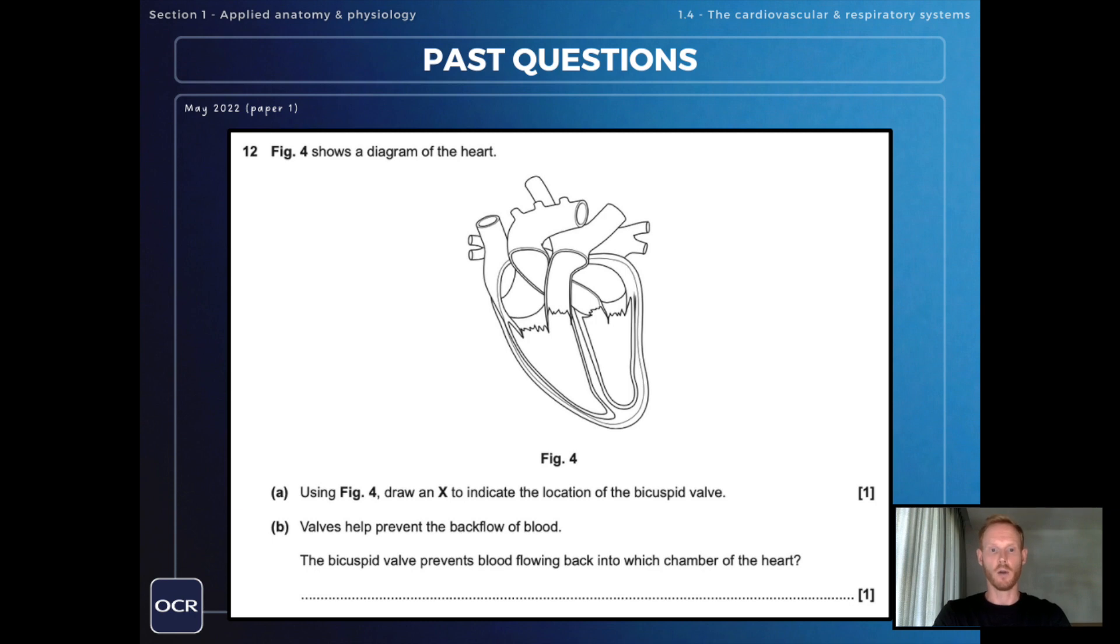Next, figure four shows a diagram of the heart. Using figure four, draw an X to indicate the location of the bicuspid valve. And the bicuspid valve is the valve that prevents backflow of blood from the left ventricle to the left atrium. The other atrioventricular valve on the right side of the heart is the tricuspid valve.